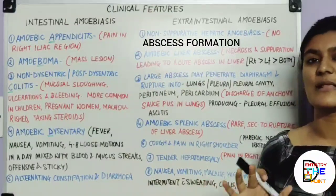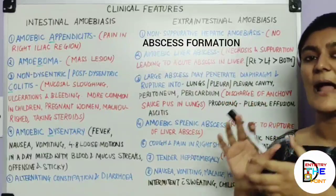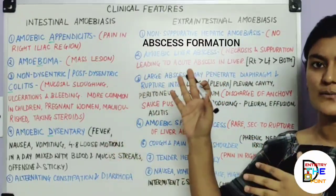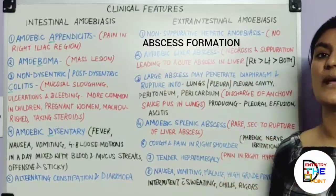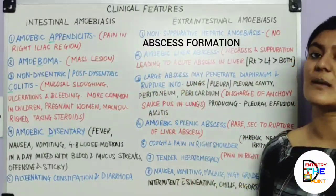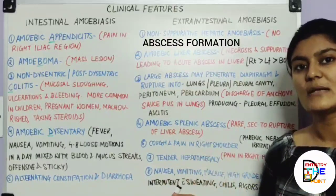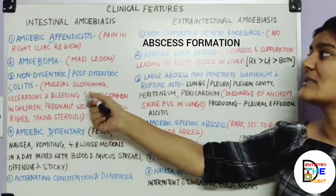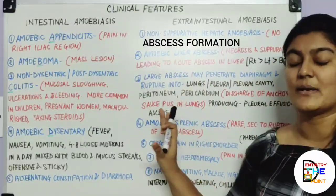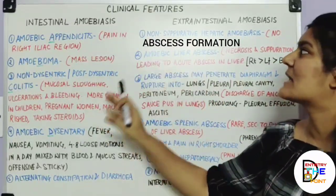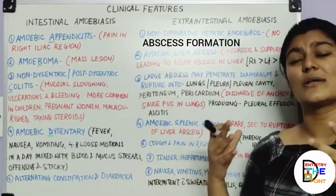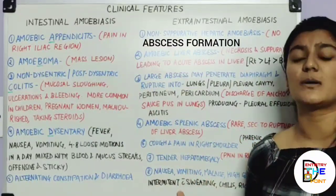One more important point: since Entamoeba histolytica first invades the large intestine and then reaches the liver through portal circulation, a person presenting with extra-intestinal or hepatic amoebiasis will often have a prior history of intestinal amoebiasis. Also notably, 70–80% of all amoebiasis cases — both intestinal and extra-intestinal — are asymptomatic; patients are simply carriers of Entamoeba histolytica without symptoms.